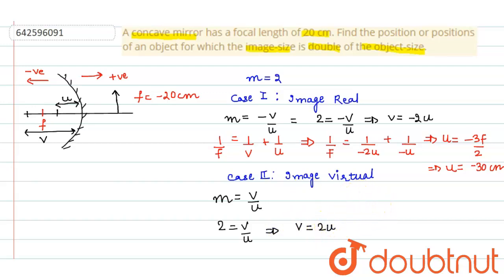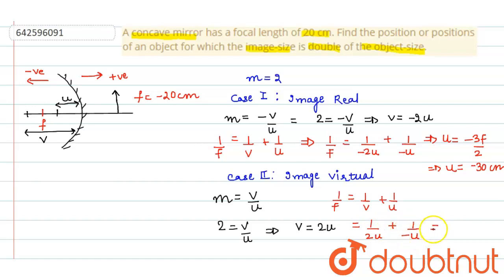Applying the mirror formula: 1/f = 1/v + 1/u. Substituting the values according to sign convention, we get 1/(2u) + 1/(−u). Solving this, u = −f/2, which gives u = −10 centimeters. Therefore, the positions of the object are 10 centimeters and 30 centimeters from the concave mirror. This is our answer.